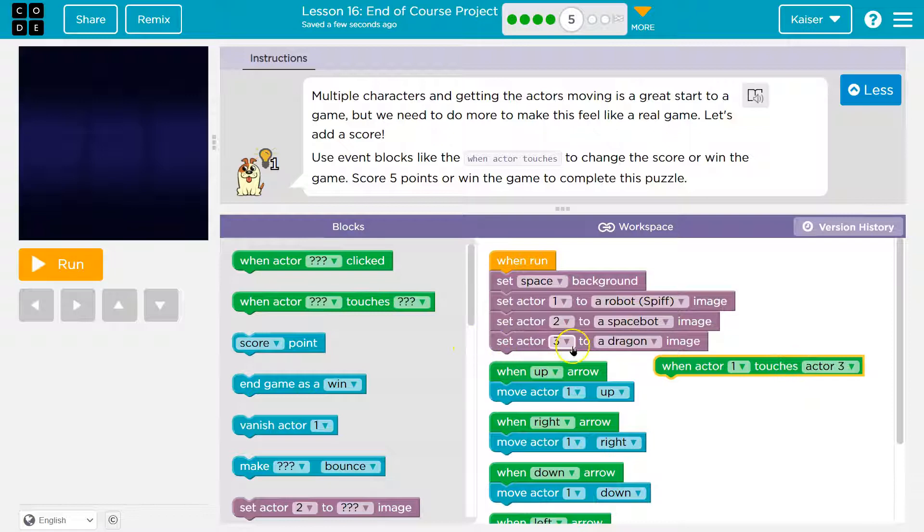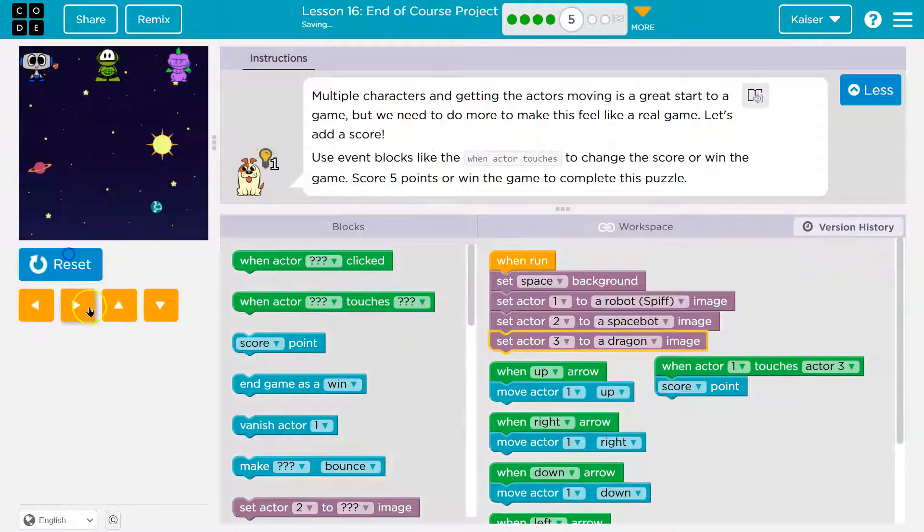So when actor one touches actor three, and I'm making sure these are different. If you don't have an actor three, that wouldn't make any sense. Now, what do we want to do? I like the suggestion of scoring a point. So I'm going to say score a point. Let's see what this does.